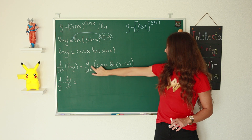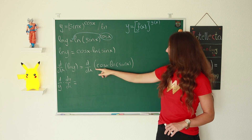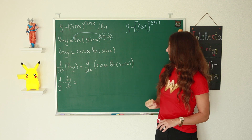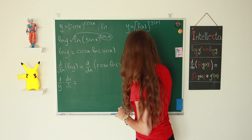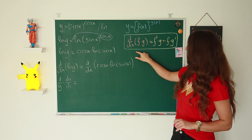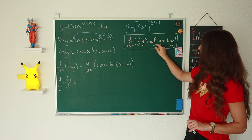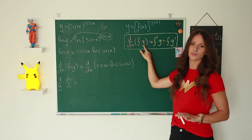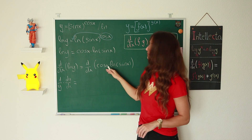On the right side, we have d/dx of cosine(x) times ln(sin x). We have the multiplication of two functions, and to find the derivative of a product of two functions we have to use the product rule. The product rule says: the derivative of the first function times the second function, plus the first function times the derivative of the second function.